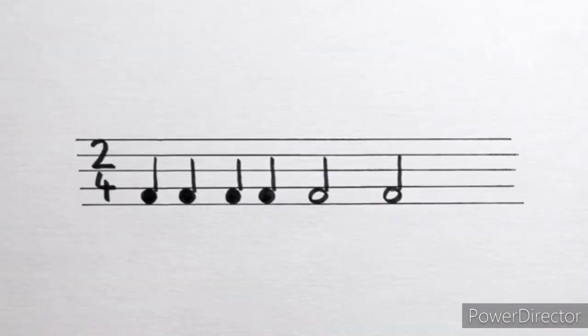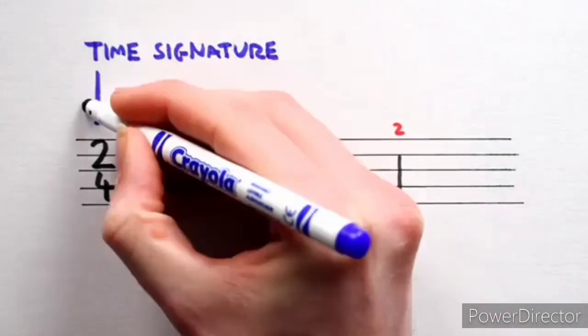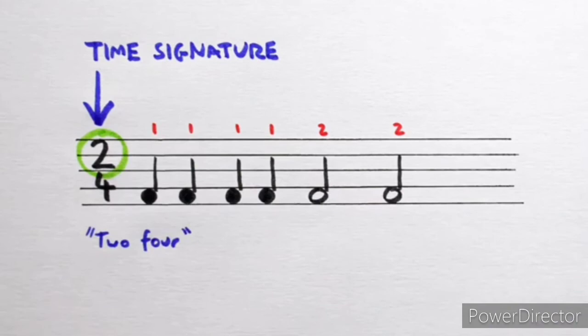Let's try one more. Again let's put in the counting. Crotchets get 1 count, minims get 2 counts. You know the drill. This time we're looking at a 2-4 time signature. 2 is on the top, so every bar needs to be exactly 2 beats long.